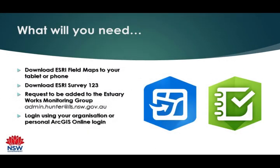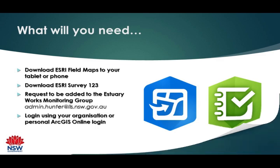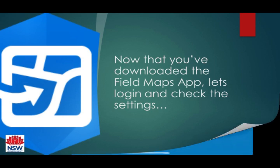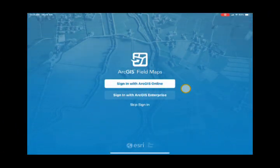Before we get started, you'll need to download the Esri Field Maps and Survey 123 apps to your phone or tablet. You need to request to be added to the monitoring group at the email address shown, and log in using your login credentials. Now let's log in and check the settings.